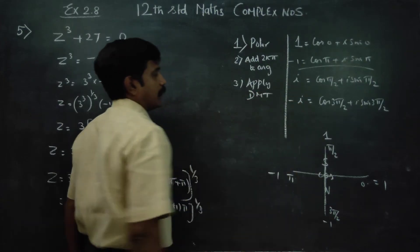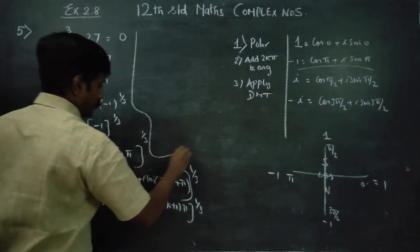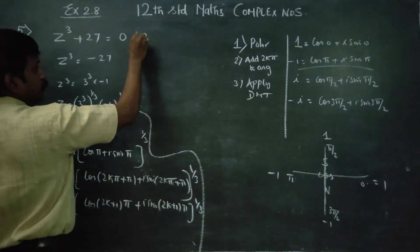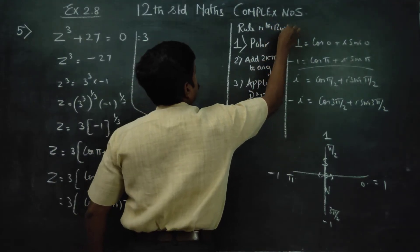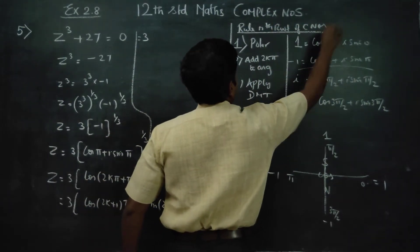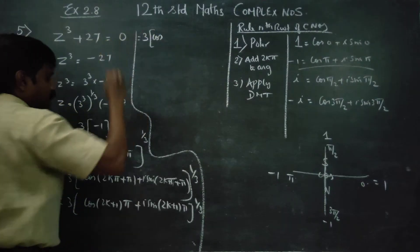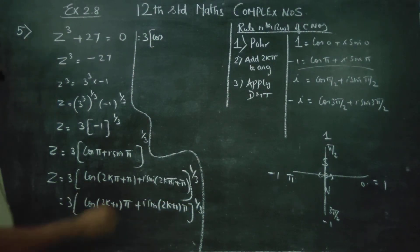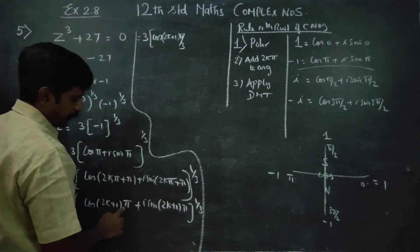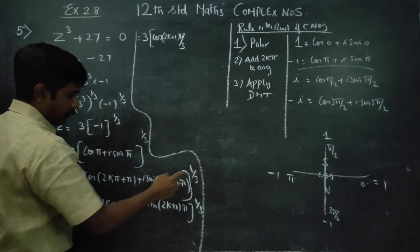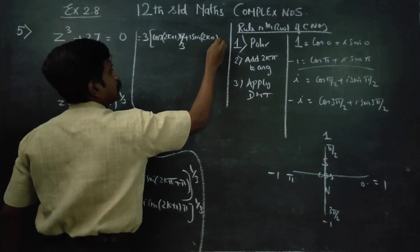Rule number 3: Apply De Moivre's theorem — bring the power 1/3 inside and multiply it with theta. So we get z equals 3 times cos((2k plus 1)π/3) plus i sin((2k plus 1)π/3), since π times 1/3 equals π/3.